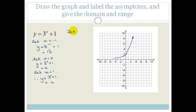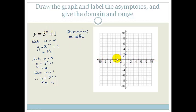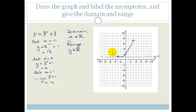Now the domain is still x is an element of real values. But I need to correct my graph — since we've moved this graph up, the asymptote is no longer y equals 0; the new asymptote is the y equals 1 line. In my rough drawing I crossed that line, which you cannot do, so be very careful. The range is now y greater than 1, since the graph can only take values above y equals 1.